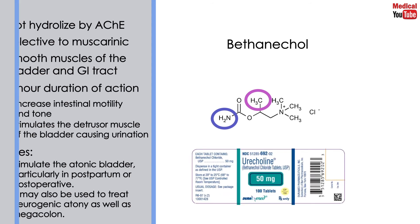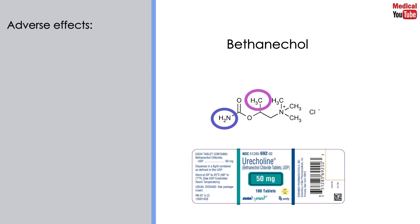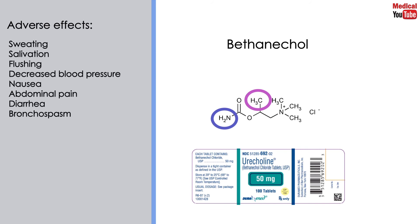But it causes some adverse effects because of its generalized cholinergic stimulation. These include sweating, salivation, flushing, decreased blood pressure, nausea, abdominal pain, diarrhea, and bronchospasm. Atropine sulfate may be administered to overcome severe cardiovascular or bronchoconstrictor responses to bethanechol.